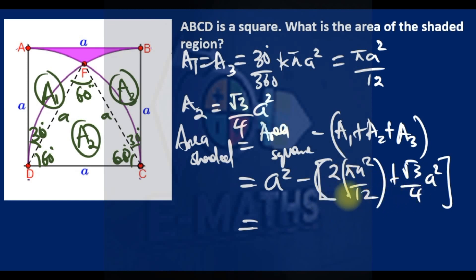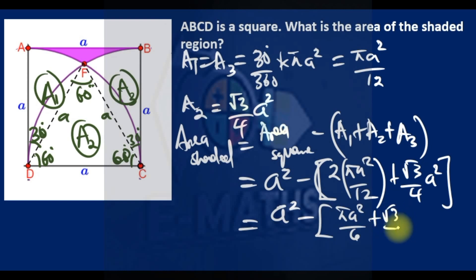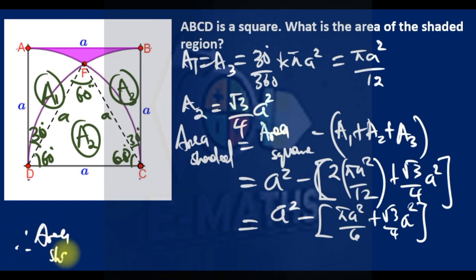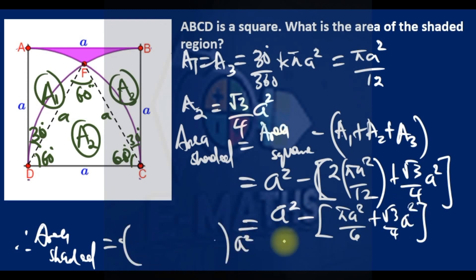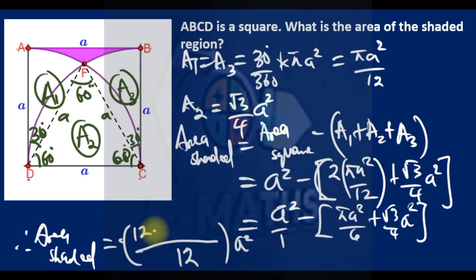Factoring out a² and using an LCM of 12, we get: a²/12 × (12 − 3√3 − 2π). That is the final formula for the area of the shaded region.